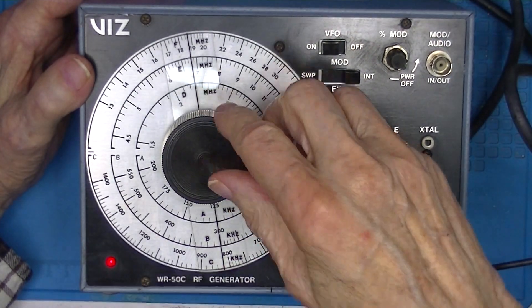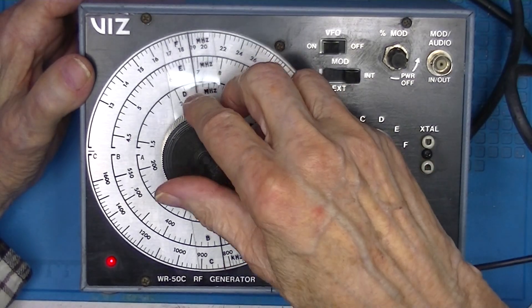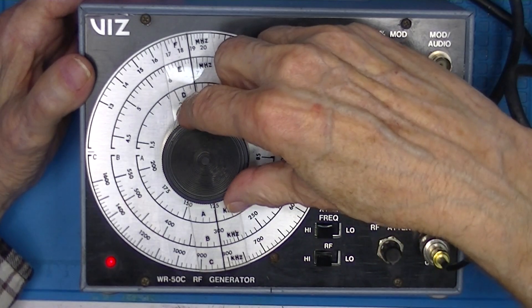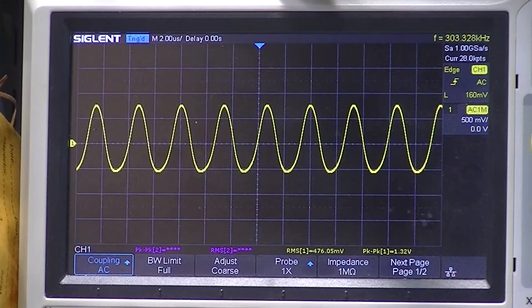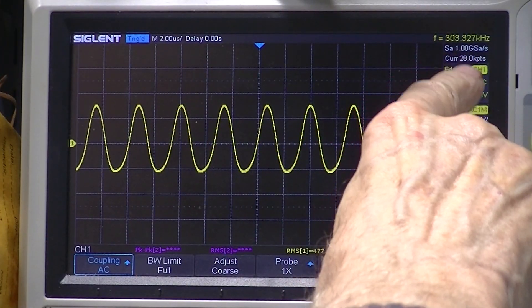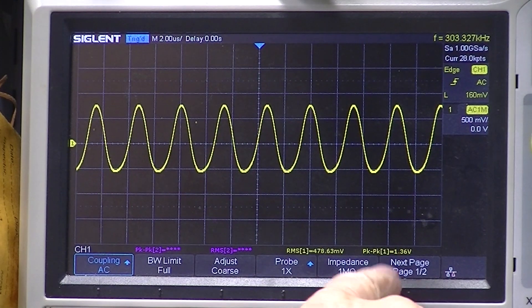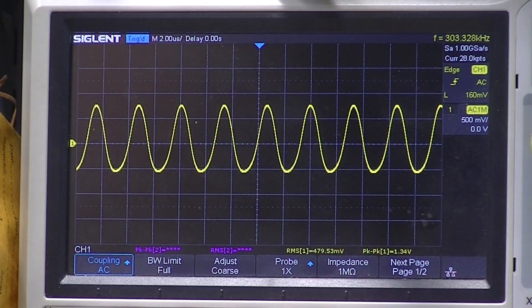I'll go to band B. And the closest on B is 300 kHz. That's right there. I'm reading 303 kHz. And 1.3 volts peak to peak.